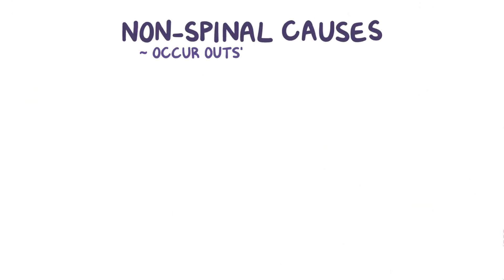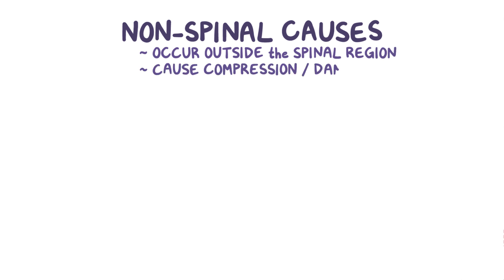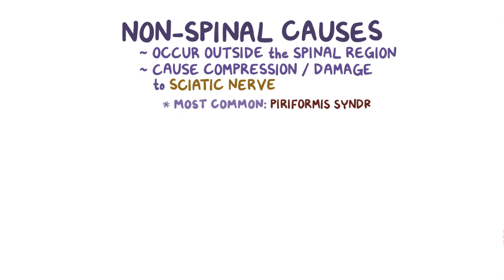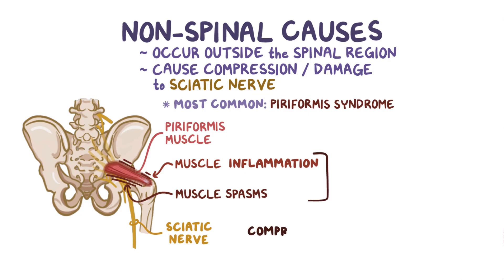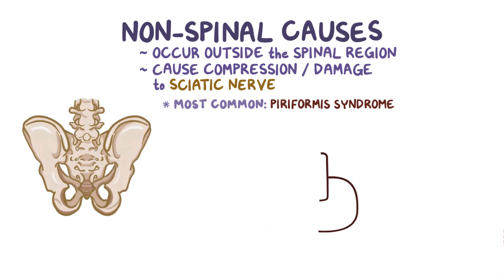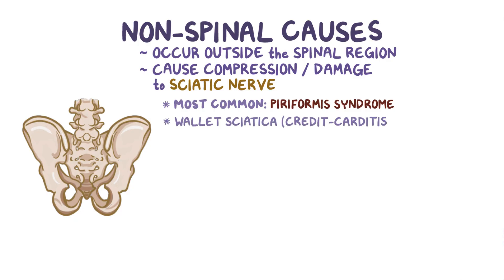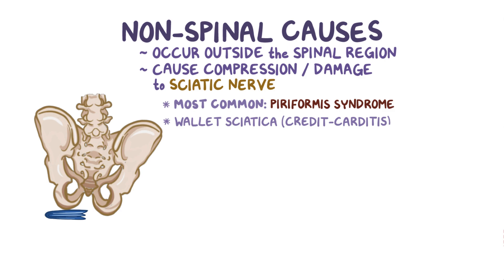Non-spinal causes occur outside of the spinal region and cause compression or damage to the sciatic nerve itself. The most common one is piriformis syndrome. The piriformis muscle and sciatic nerve are very close to each other, so if the piriformis muscle gets irritated, it can cause muscle inflammation or muscle spasms that can compress the sciatic nerve. A more recent phenomenon is the so-called wallet sciatica, or credit carditis. Many people carry their wallets or other objects in their back pockets, so when they sit down, these objects put pressure on the gluteal muscles which compress the sciatic nerve, causing sciatica.